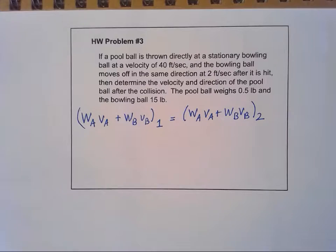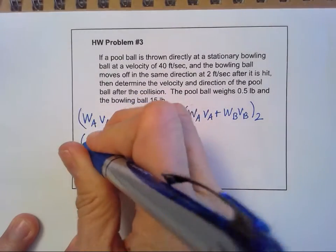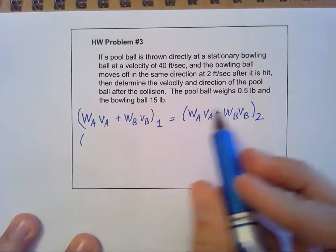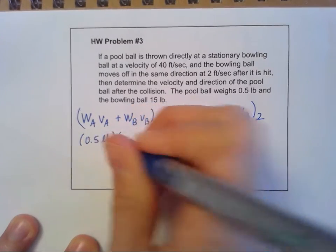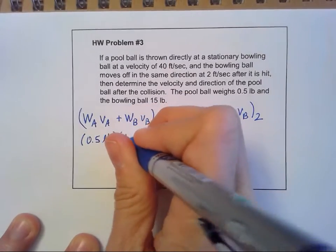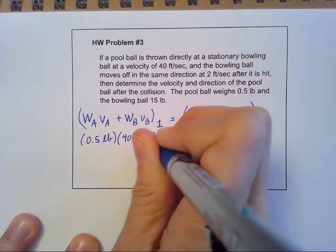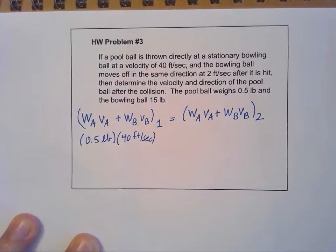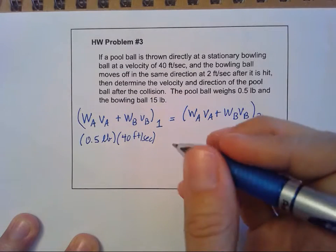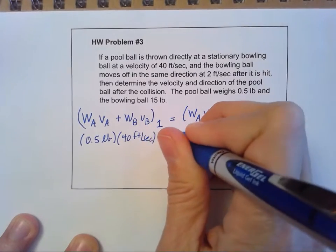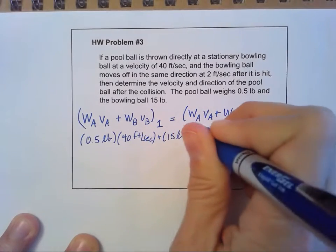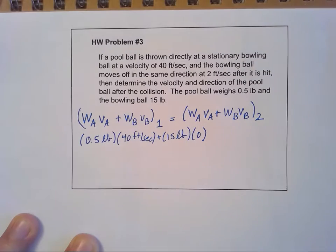Let's plug some values in. I said my weight, I called A the pool ball. So this was 0.5 pounds. Its initial velocity was 40 feet per second, and I said that was in the positive direction. So I'll just leave that as it is. Then I had the weight of the bowling ball, which is 15 pounds. But it was stationary to start with, so its velocity in the before condition was 0.